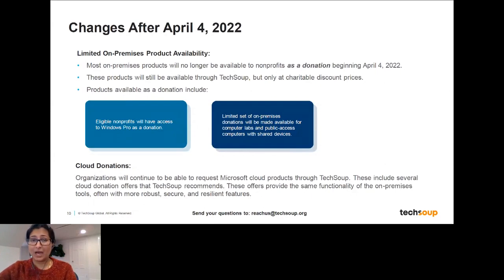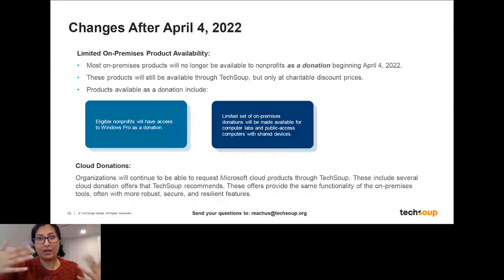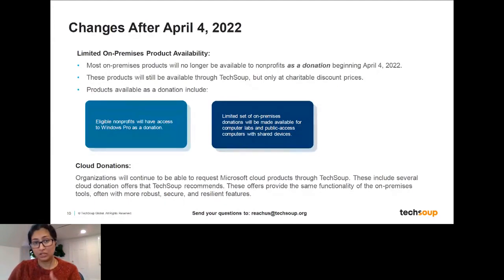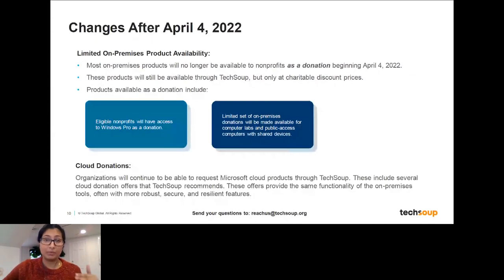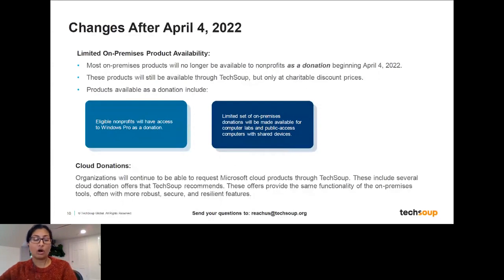There are a few exceptions. One exception is that a full Windows Professional license will still be available as a donation, since many organizations need a full operating system before they can leverage cloud solutions. And there's a specific carve-out for organizations with public access computers or computer labs where multiple people use a device, providing an opportunity to still have some access to donations for those devices.